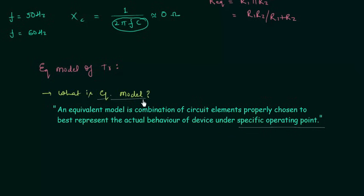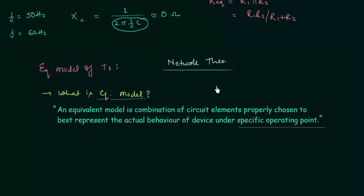We need to find out the equivalent model of the transistor because the use of equivalent models is very important. We cannot apply network theorems directly on a practical device, so we need the equivalent model to use these theorems to find out different network parameters.